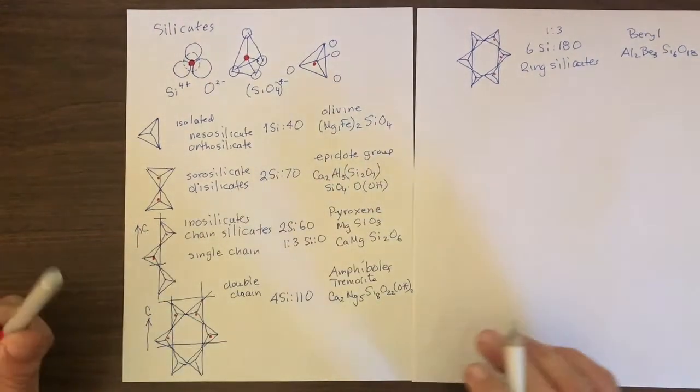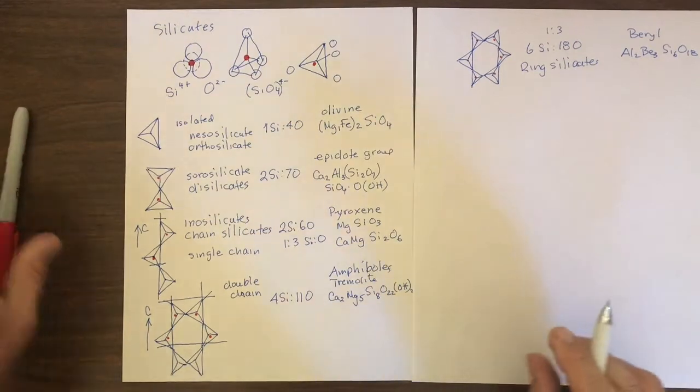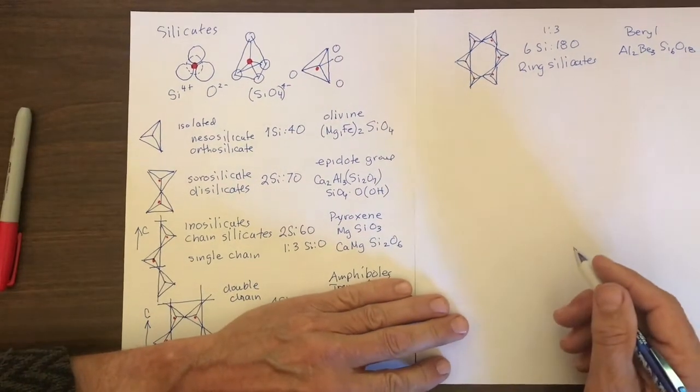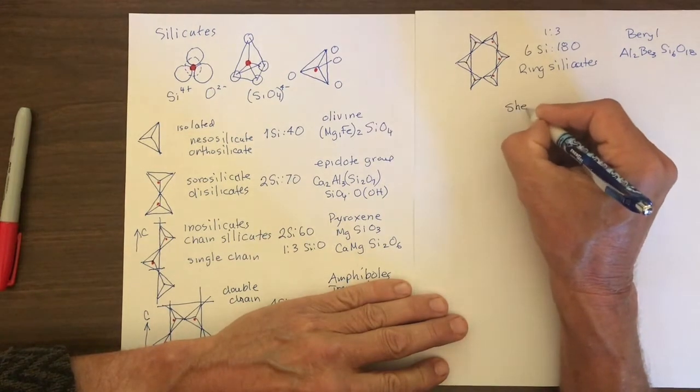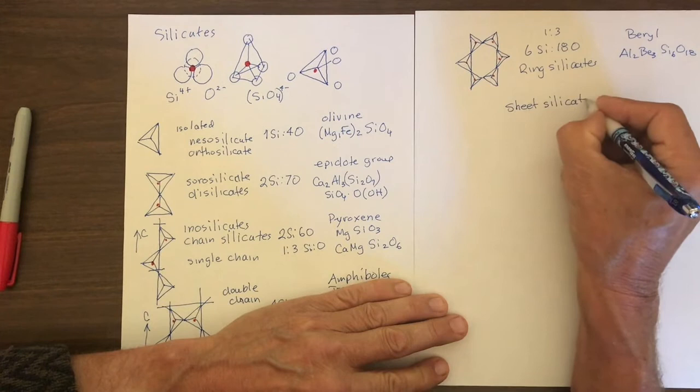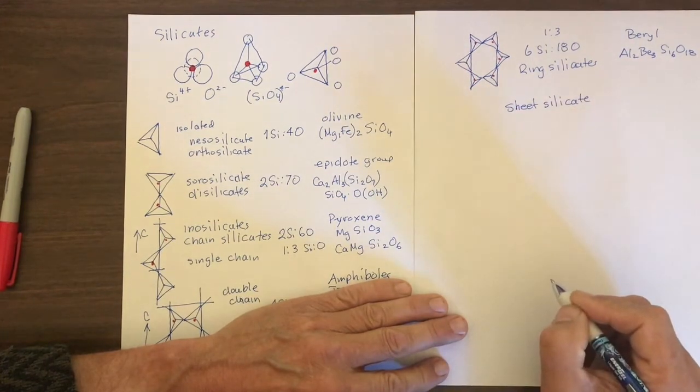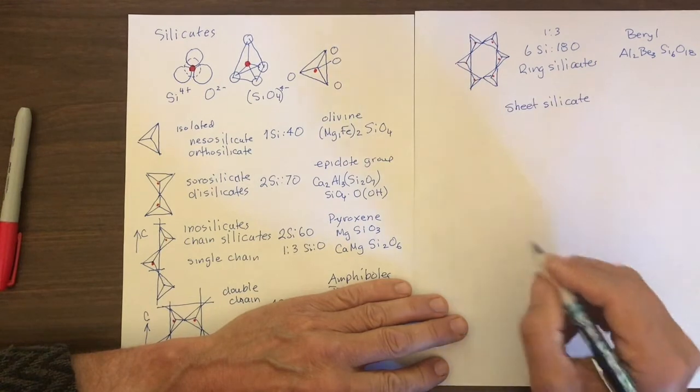As the inosilicate pyroxene group. Okay, the next type we're going to look at are sheet silicates, where the tetrahedral silicas are linked to other silicas in 2D sheets.